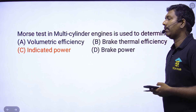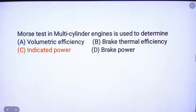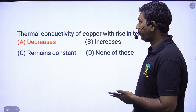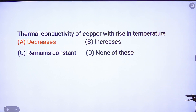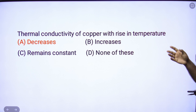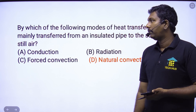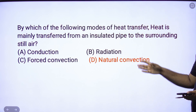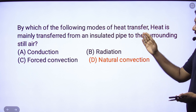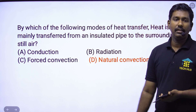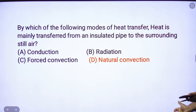Morse test is applied to a multi-cylinder engine to find indicated power — option C is the correct answer. Thermal conductivity of copper: with rise in temperature it decreases — option A, correct answer. By which mode of heat transfer is heat mainly transferred from an insulated pipe to surrounding still air? Natural convection — option D, correct answer.